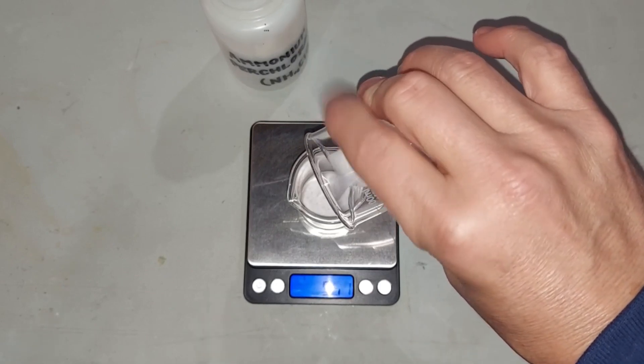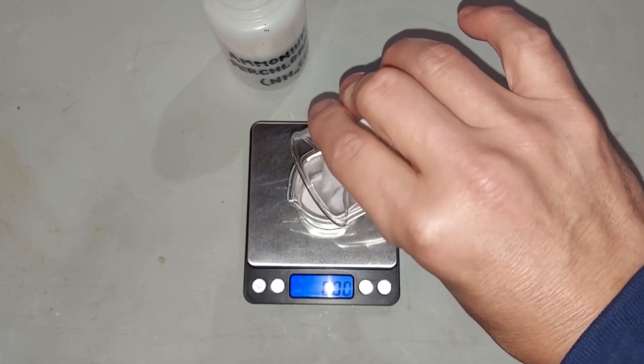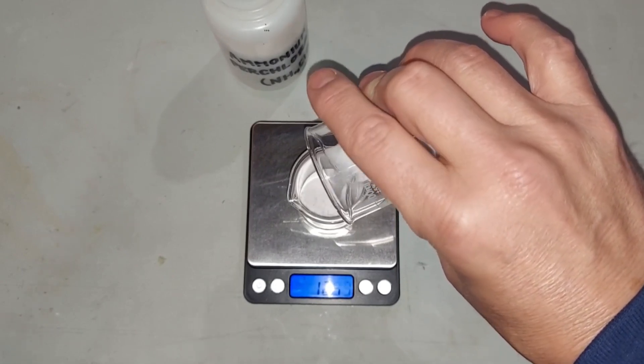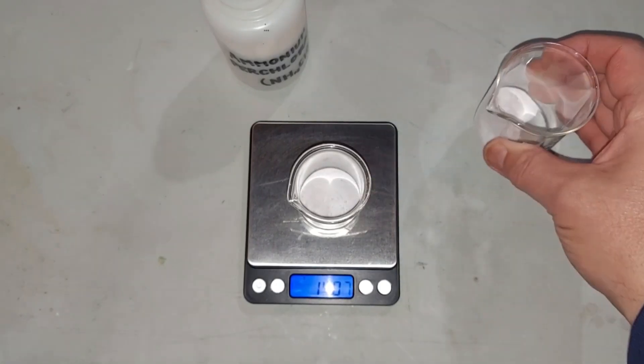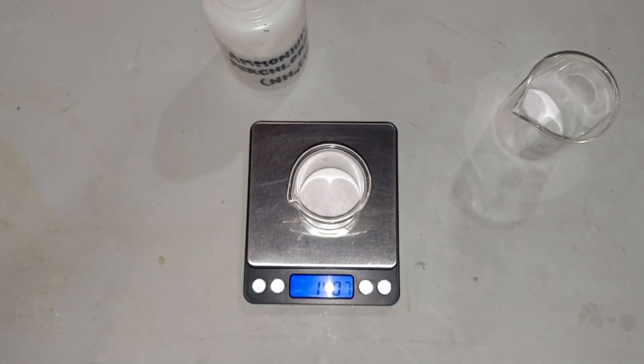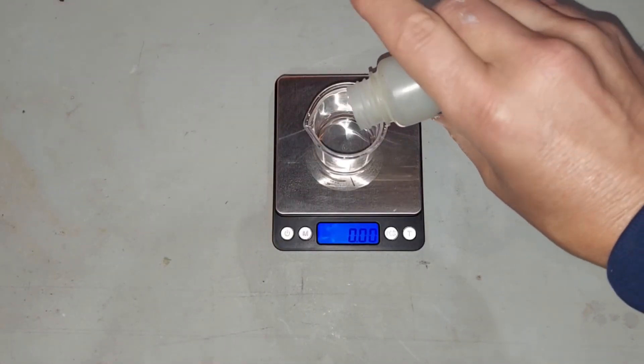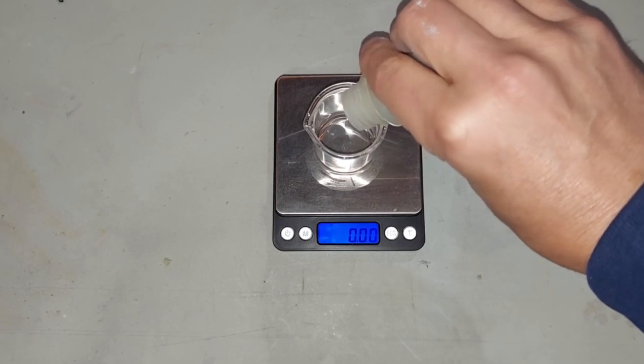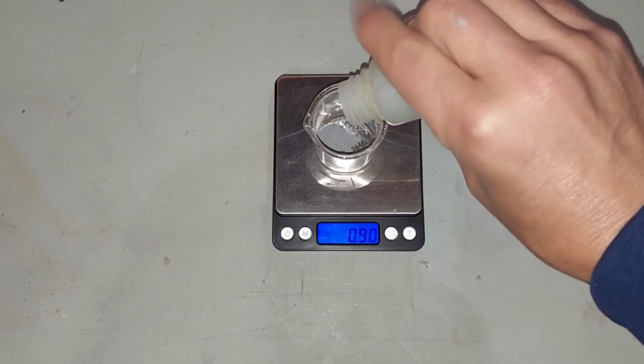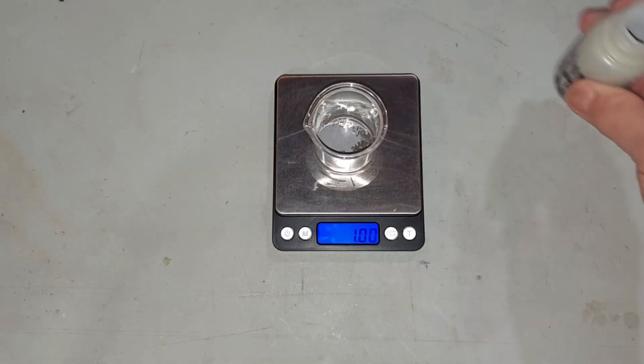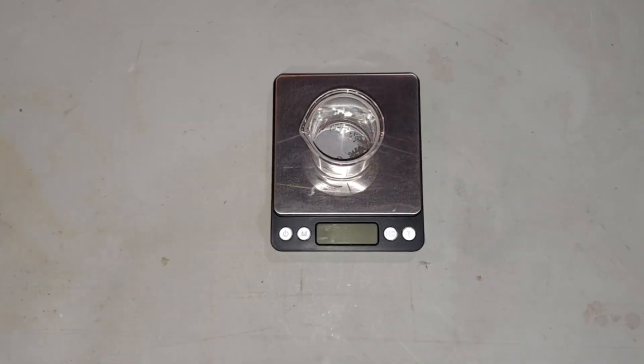Alright, we need 14 grams of this. 14.07, we'll call it quits right there, close enough. I'll do this twice for each mix. I'm weighing out one gram of powdered aluminum. There we go. I'll be weighing out the three grams of aluminum off camera.